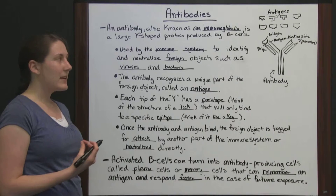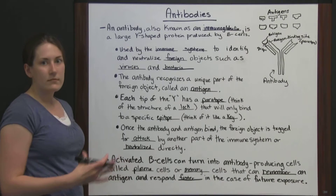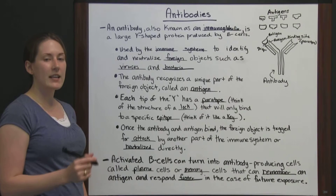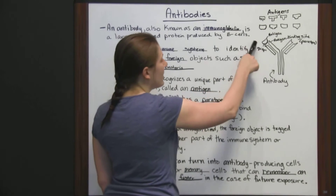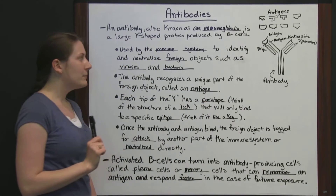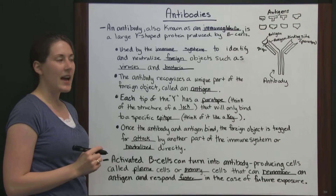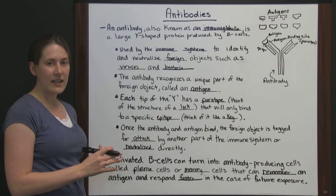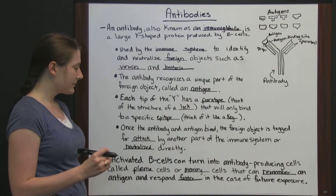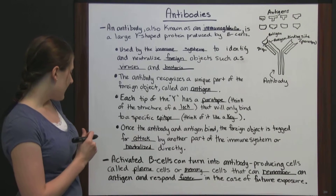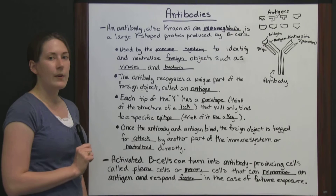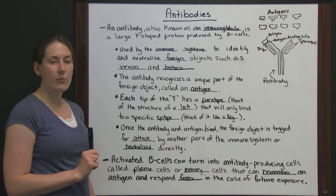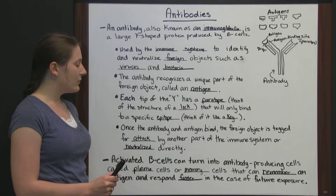Antibodies are very helpful with maintaining your immune system and keeping any organism healthy. The B cells produce the antibodies. The antibodies find foreign objects, find the antigen on them, and the particular epitope that it can bind to, and once they bind, that foreign object is tagged for removal. It's either going to be attacked by another part of the immune system, or neutralized directly and it won't be able to harm anything. You've got your plasma cells that produce more antibodies, and your memory cells that remember past antigens and know how to respond to them faster in the future.